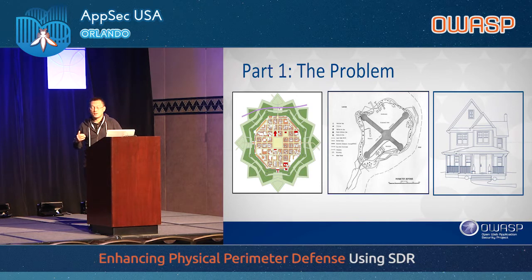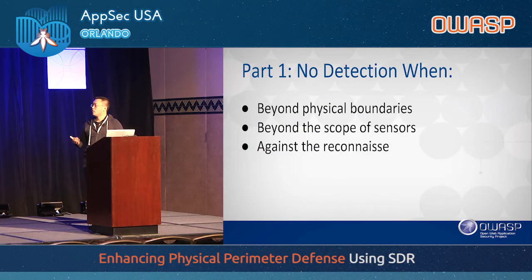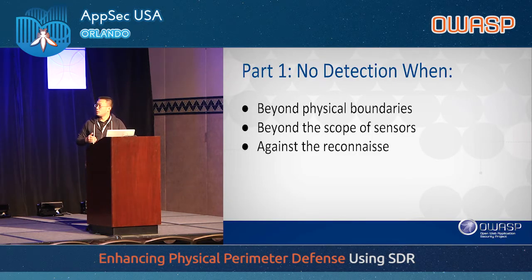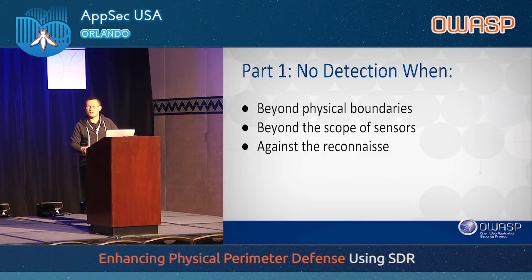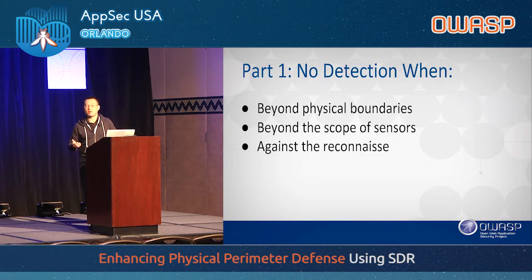Since current defense systems are based on the boundary, your capability is sometimes limited to sensors such as cameras and motion sensors. Your sense of your surroundings cannot go beyond those sensors. Also, if the attacker is trying to recon against your perimeter, there's nothing you can do about it, because they haven't really touched the sensor or stepped into the zones of your camera or motion sensors — so you never know if they've ever showed up before.